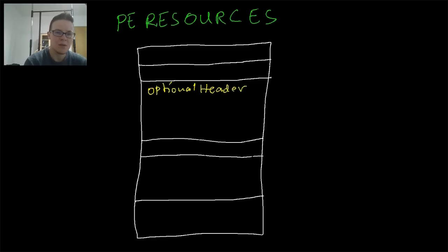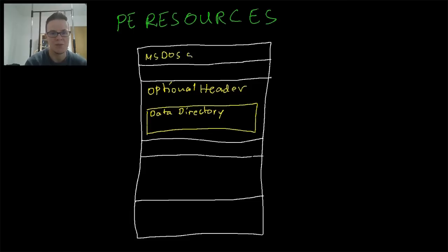So the actual resources or the starting point to find them is the optional header. And the optional header has a so-called data directory. The data directory is simply a list of entries which point to certain data structures. They have addresses, virtual addresses, and they have the sizes of these data structures.